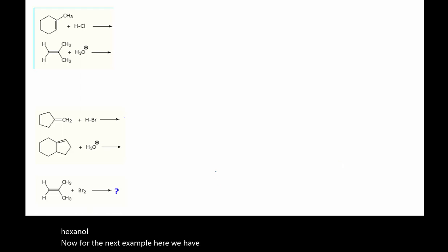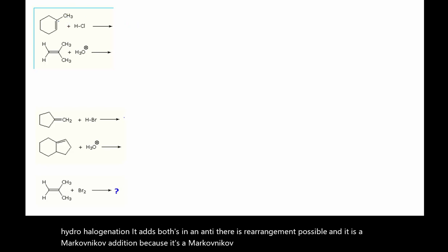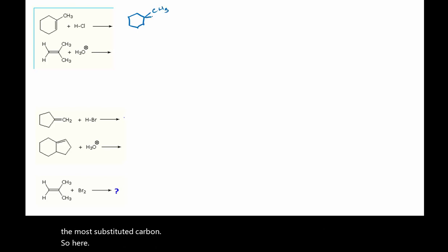For the next example here, we have HCl being added across that double bond — that's a hydrohalogenation. It adds both syn and anti, there is rearrangement possible, and it is a Markovnikov addition. That chlorine is going to add to the most substituted carbon. Here we are not forming a new stereocenter, so that makes it easy.